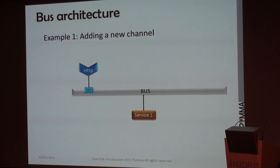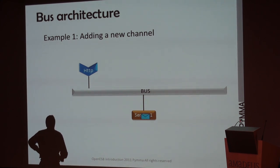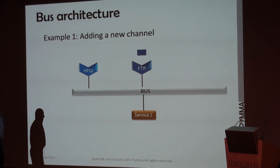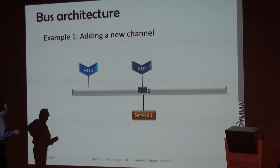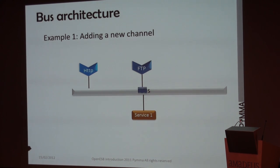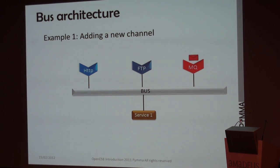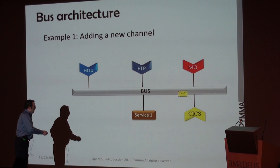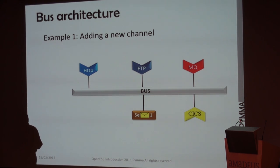Why do I need all this infrastructure when I could just use a simple HTTP server? The reason is that I want to add a new communication channel. I can add an FTP binding component alongside the HTTP one — the FTP connector gets the message from an FTP server and sends it to the bus. The key interest here is that I have no modification on service one. I can also add synchronous communication, and I can send messages to the outside world from service one — using the bus, I can use multiple channels without any impact on service one.